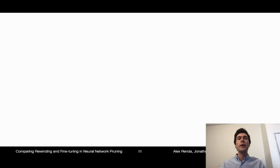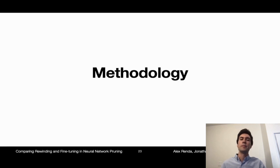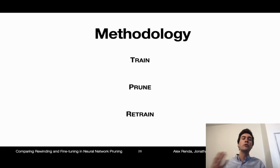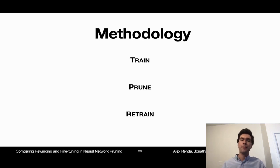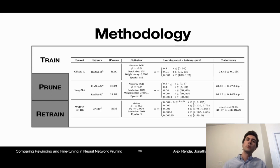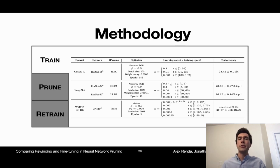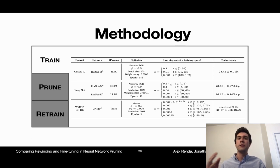These are pretty strong claims, so let's talk about the methodology of our experiments. The typical pruning process has three steps: train the network, prune the network, and then retrain the remaining weights. We compare rewinding and fine-tuning across different networks and different pruning algorithms to validate that our results hold up consistently and not just in a couple of cherry-picked settings. We use standard training schedules from the literature. Specifically for image classification, we use CIFAR-10 ResNet-56, and then ImageNet ResNet-34 and 50. For machine translation, we use WMT-16 GNMT. These are all standard networks for their respective datasets, and the training schedules each reach their respective accuracies for their tasks.